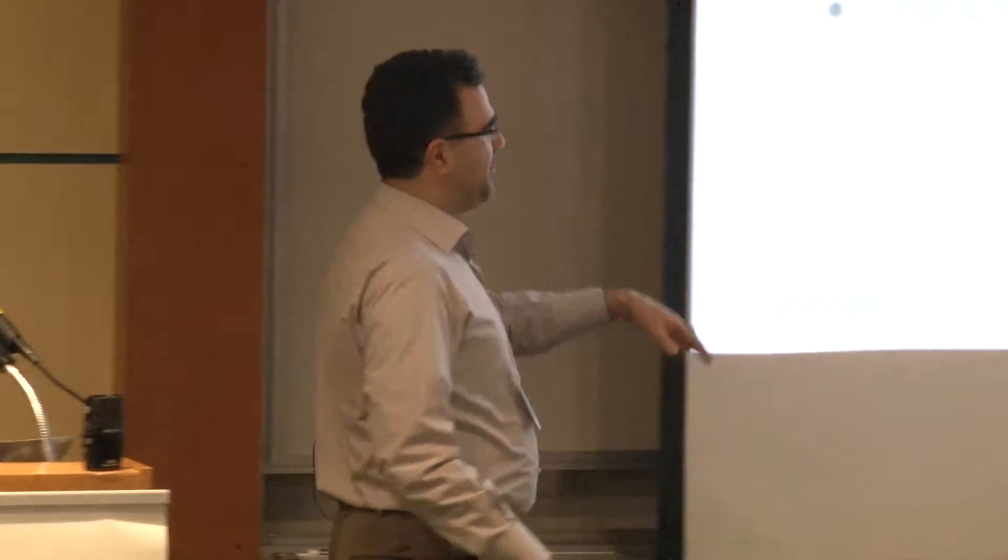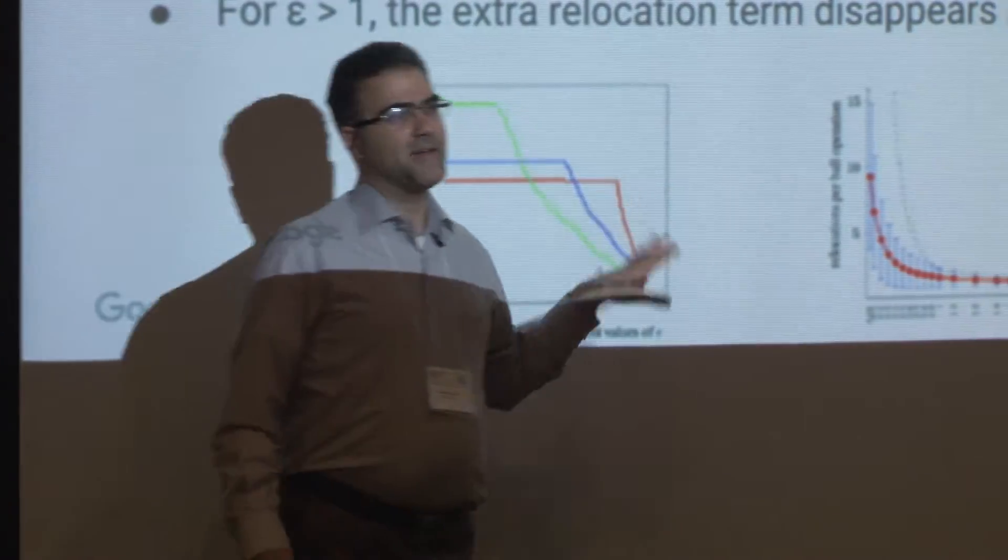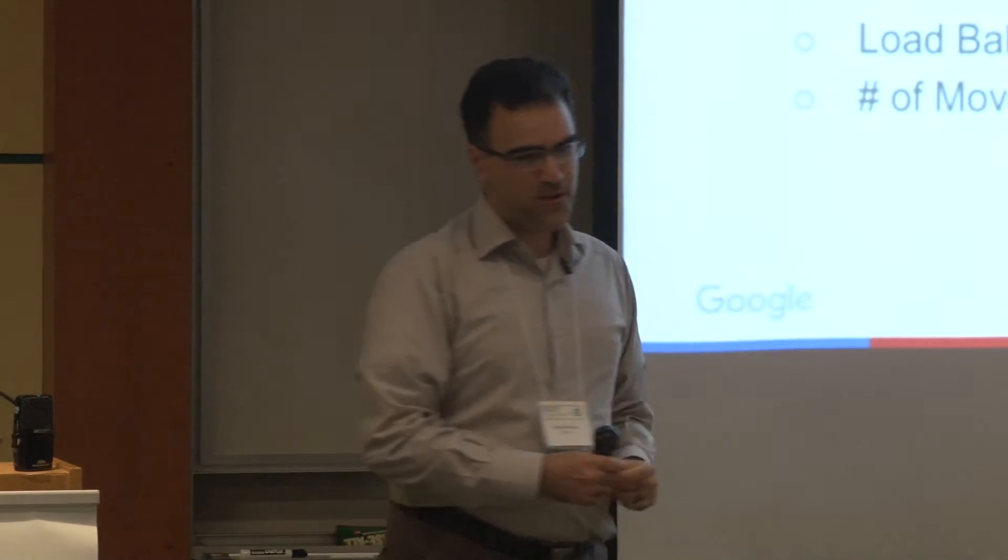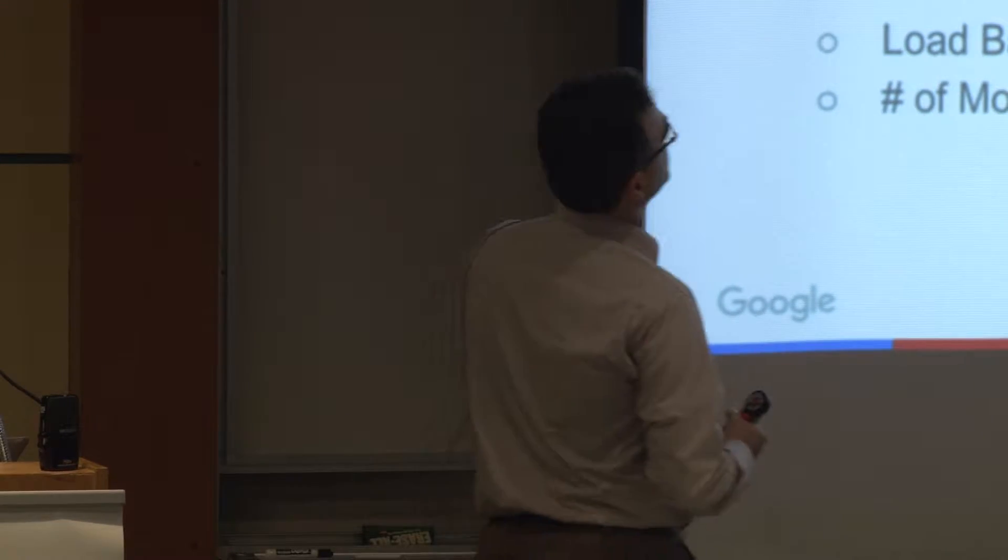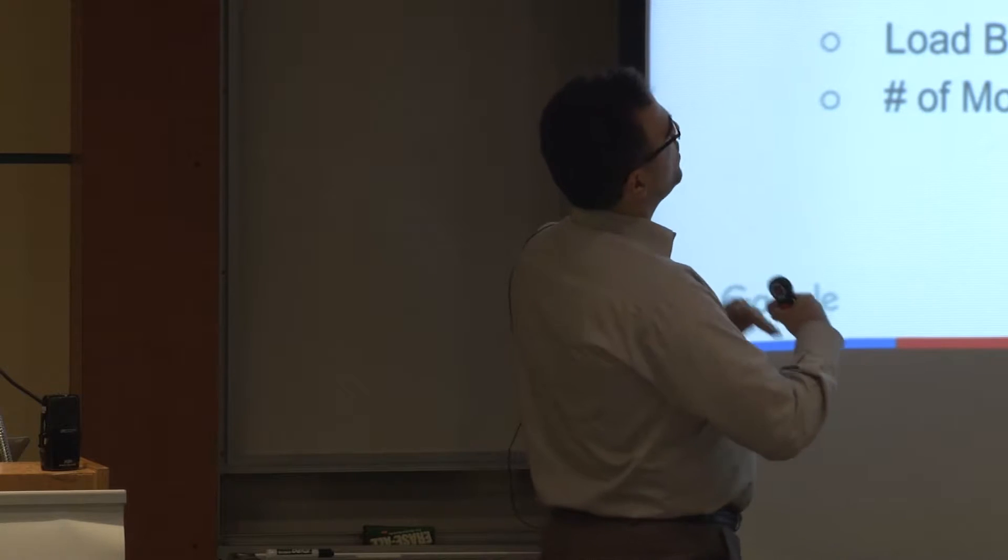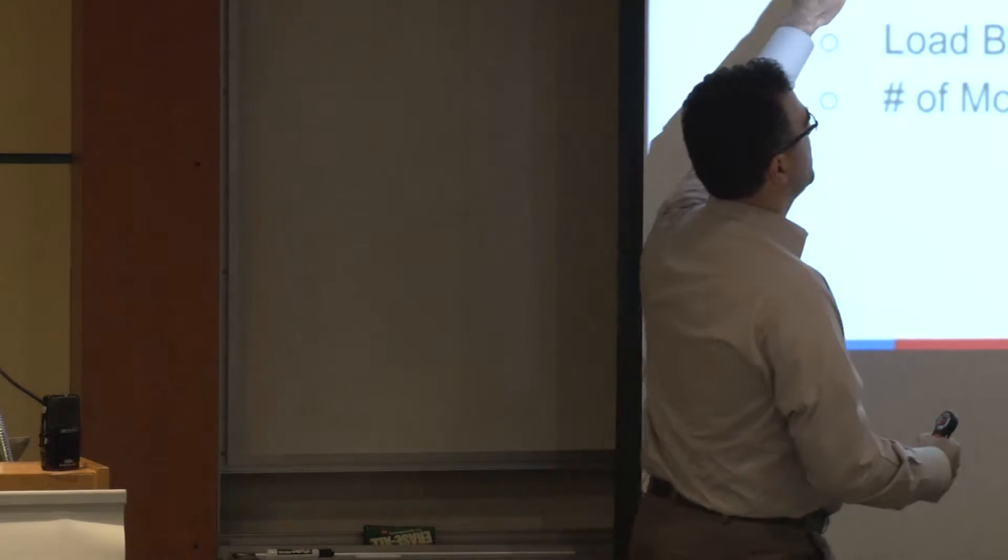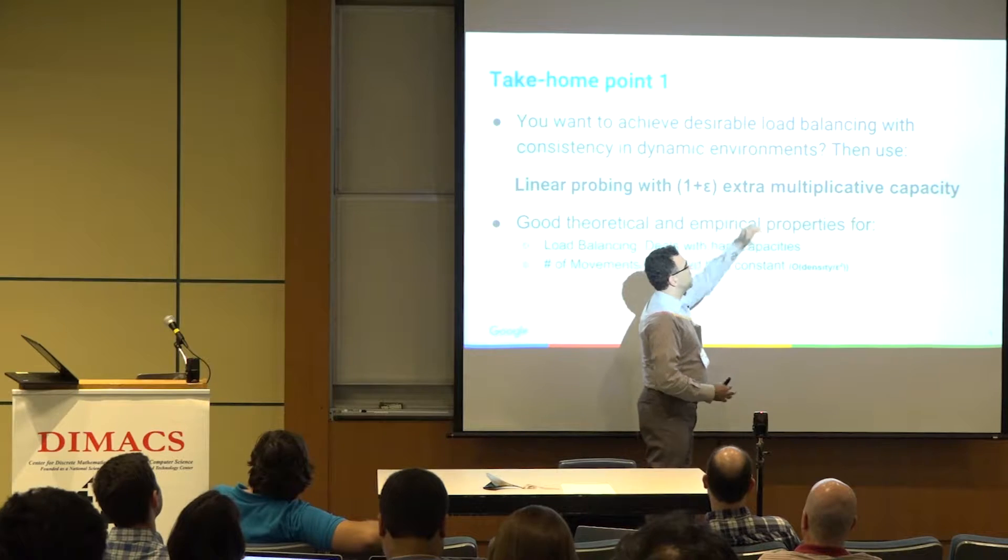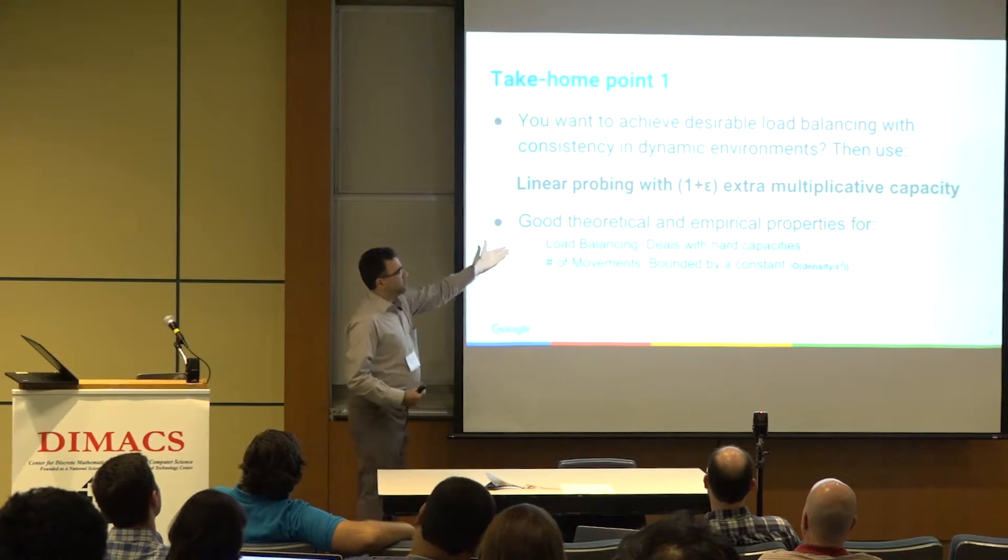We have done several simulations on different types of scenarios, and we have deployed this in one of the systems, but I haven't received approval to tell you about that part. The message of the first part, the take-home point, is that when you want to achieve a desirable load balancing in a dynamic environment, try linear probing with 1 plus epsilon extra multiplicative capacity. The good news is that we have both good theoretical bounds and empirical properties for this, and you can deploy it easily in a system.